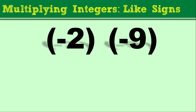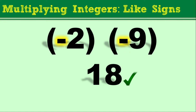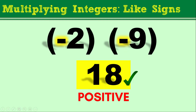How about still like signs, but this time both are negative integers? We have negative 2 multiplied to negative 9. Since both integers have the same sign — a negative sign — they have like signs, so the answer is positive 18. Take note: when you multiply integers with like signs, whether both positive or both negative, the result is always a positive integer.